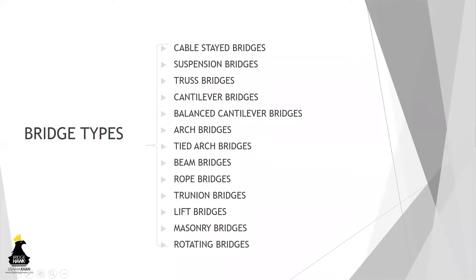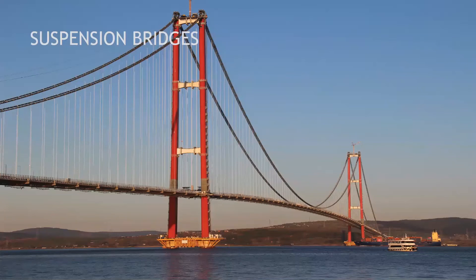Moving forward, we have different types of bridges. It depends upon the client what type of structure is required — some projects might have an aesthetic appeal and some might not. Based on what the problem statement is, the bridge type is decided, completely determined by the client or the government authority in charge of the project. For example, suspension bridges have a big cable with suspended stays holding the girder. This is the Shanakli bridge in Turkey. We also have balanced cantilever bridges.